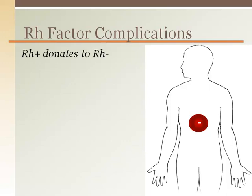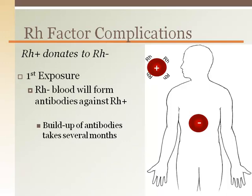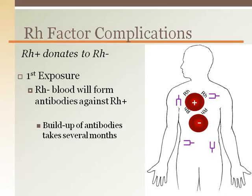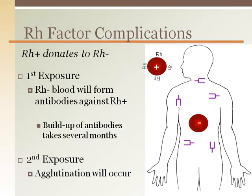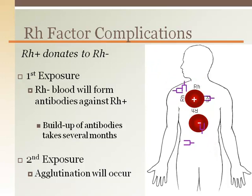An Rh negative person has no Rh factor, so there is not a problem with them donating to another. The problem occurs when blood containing the Rh factor — Rh positive blood — is given to a person that is Rh negative. The first exposure is not a problem. However, the recipient who is Rh negative will develop antibodies toward the Rh factor, so that the next time the Rh negative person is exposed to Rh positive blood, the Rh antibodies will attack the donated Rh positive blood.